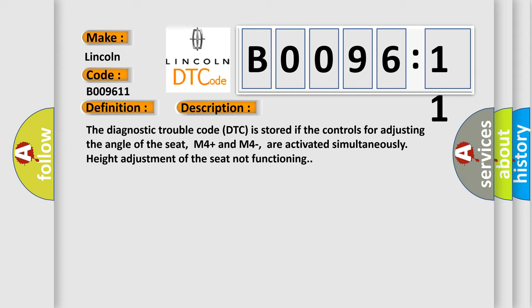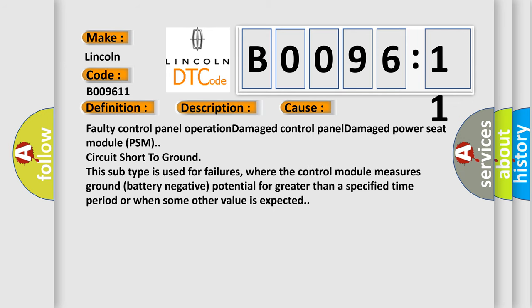This diagnostic error occurs most often in these cases: Faulty control panel operation, damaged control panel, damaged power seat module PSM, circuit short to ground. This subtype is used for failures where the control module measures ground battery negative potential for greater than a specified time period or when some other value is expected.